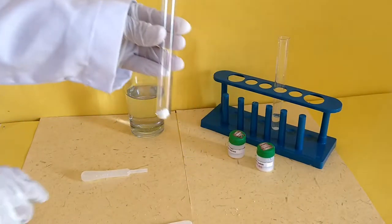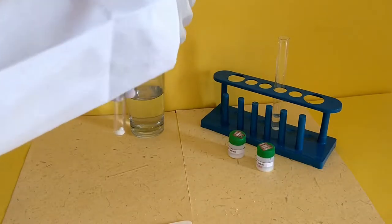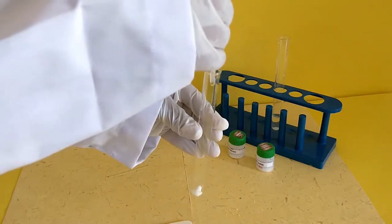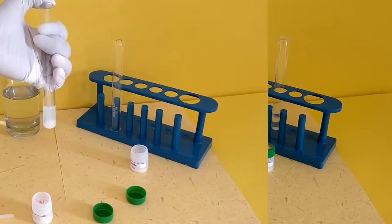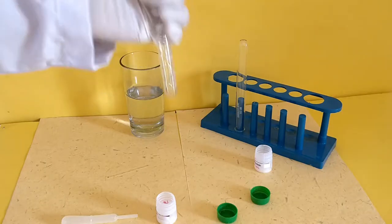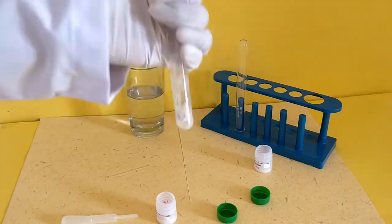Take about half a spatula full of lead nitrate salt in a test tube and fill it up to one-fourth full with water. Now shake the test tube till the salt is dissolved to prepare an aqueous solution of lead nitrate.